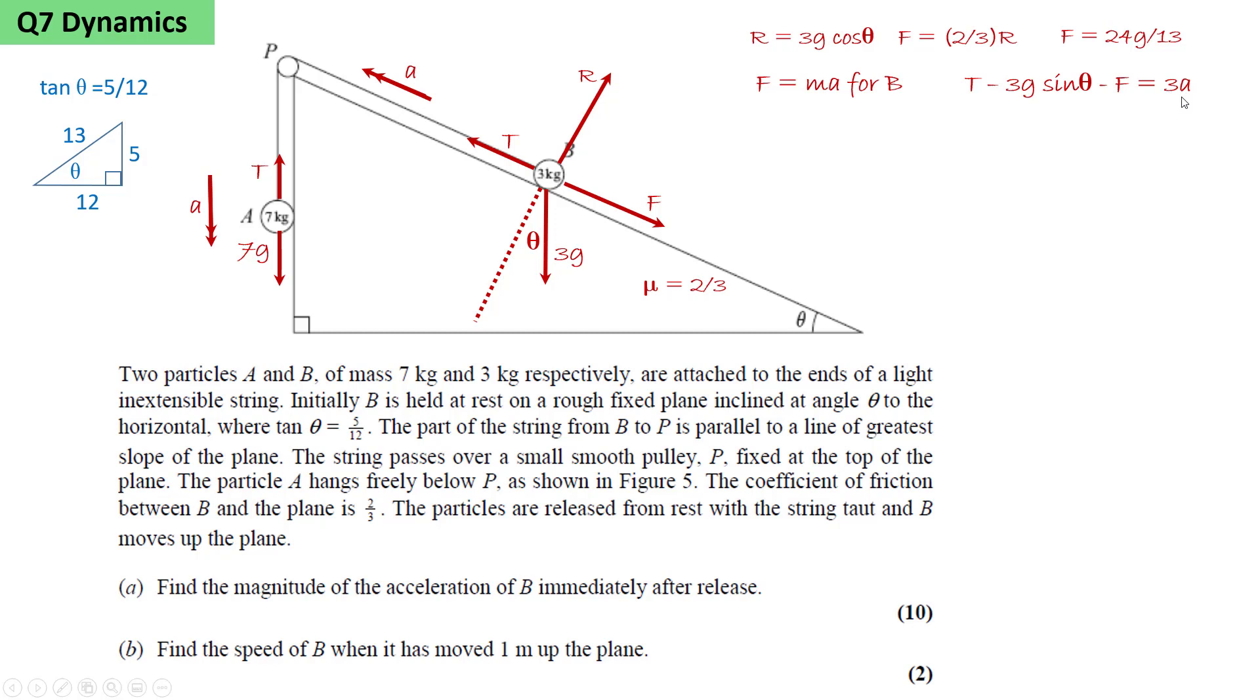Applying F equals ma at A, the net force is 7g minus T, and this is accelerating a mass of 7 kilograms with acceleration a. Adding these two equations we get 7g minus 3g sin theta minus F equals 10a. We know sin theta and F, from this we can calculate that a equals 2g/5.